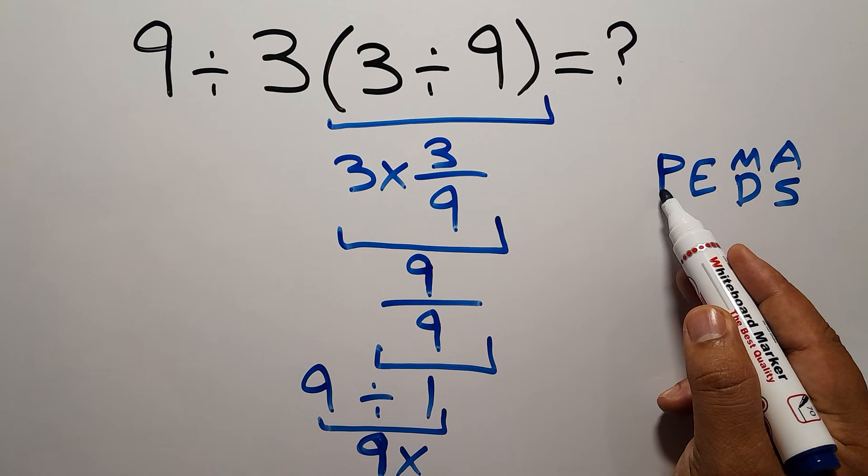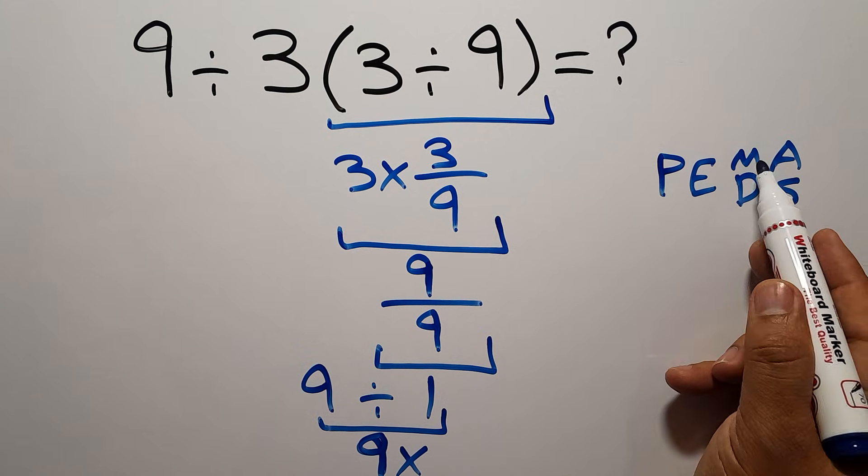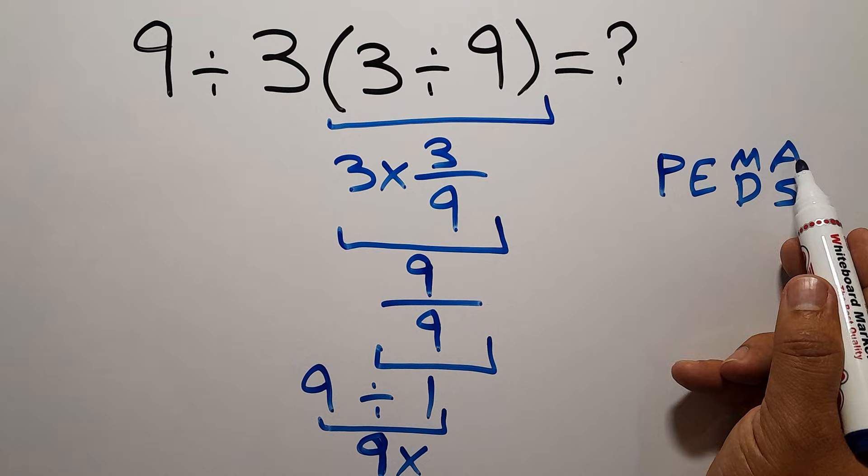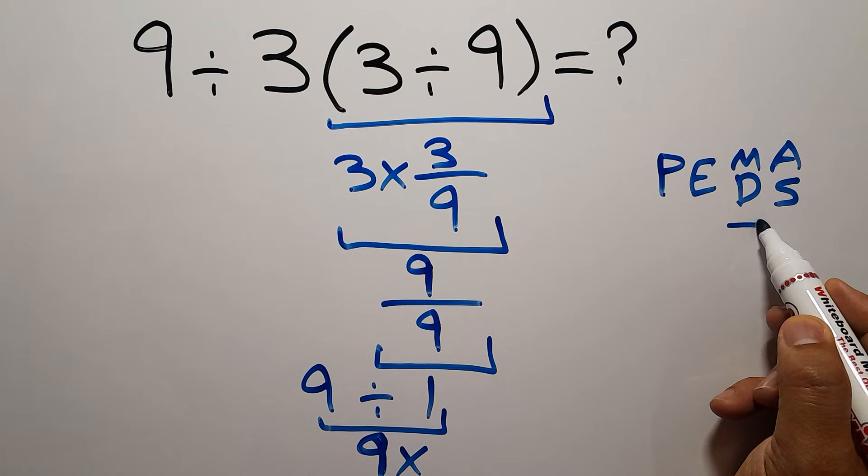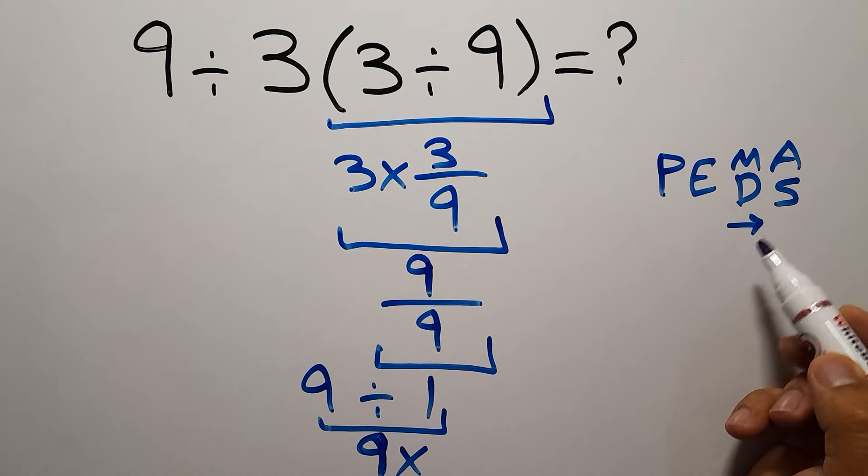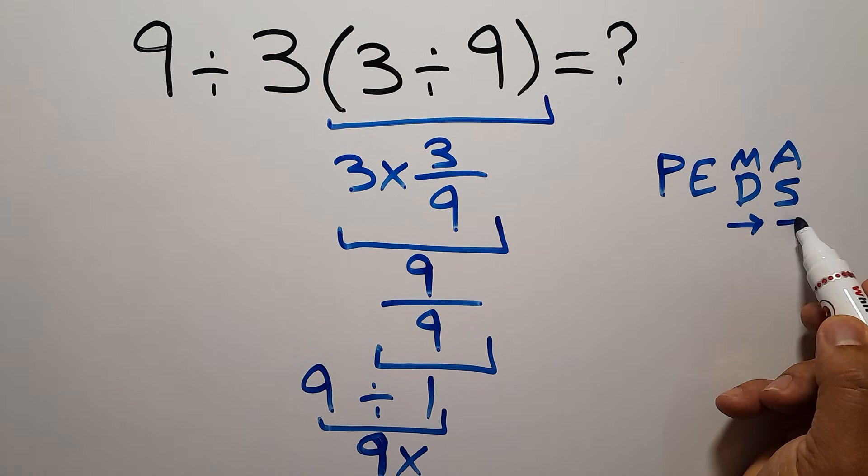First, we have to do parentheses, then exponents, then multiplication or division, and finally addition or subtraction. Remember that multiplication and division have equal priority, and we have to work from left to right. And the same applies to addition and subtraction.